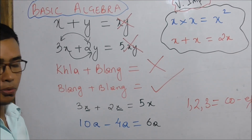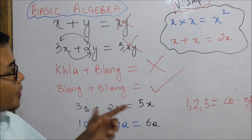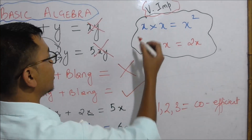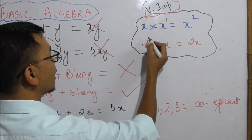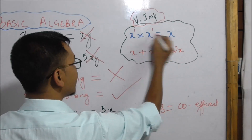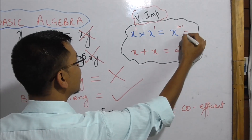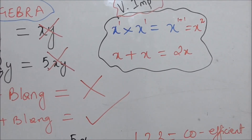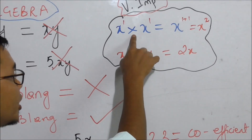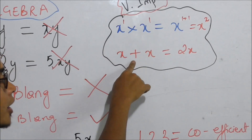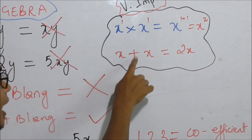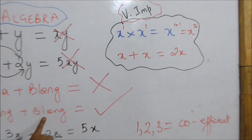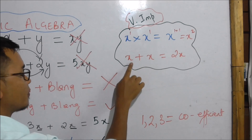I will show you the laws of exponents. The laws of exponents: X into X is X to the power of 1. The power of 1 is 1 plus 1, so the answer is X to the power of 2.